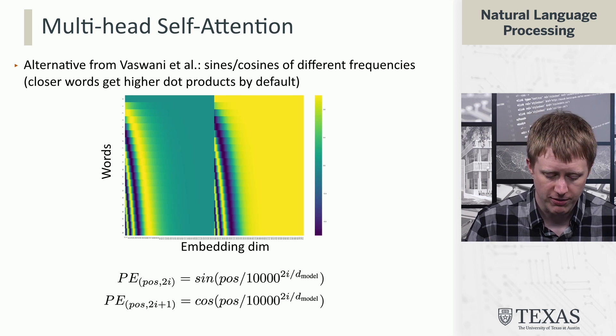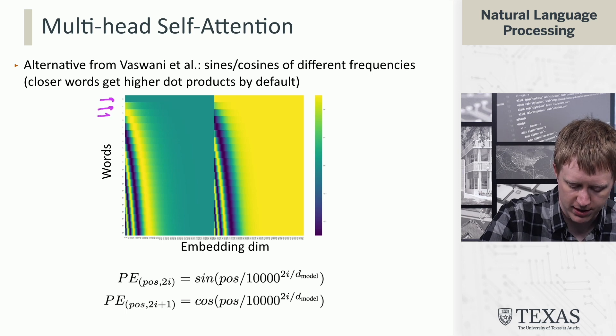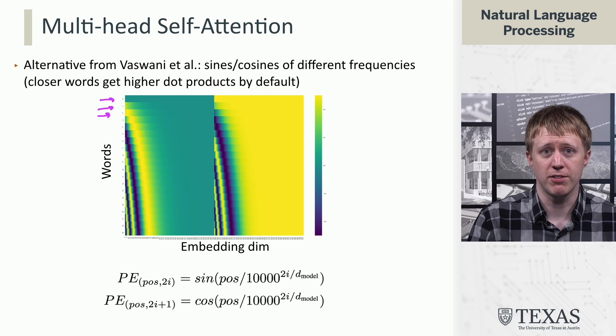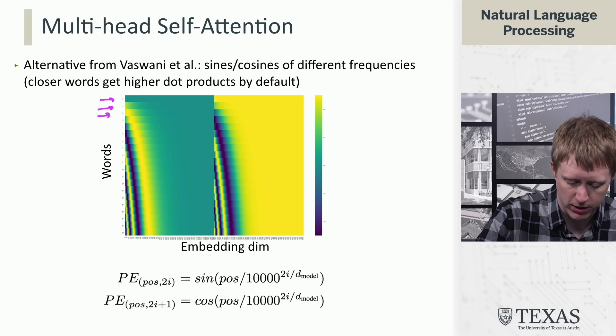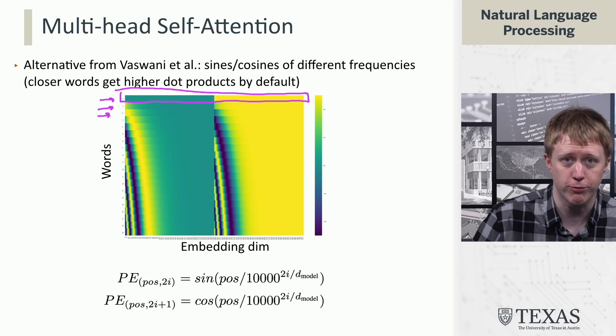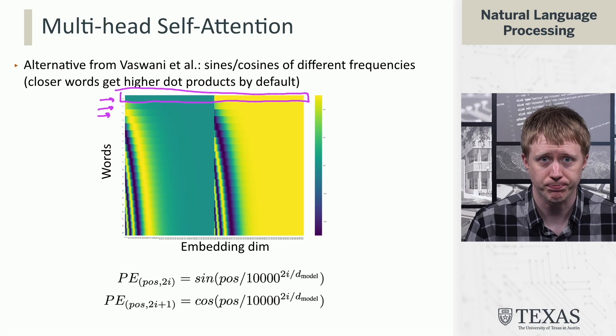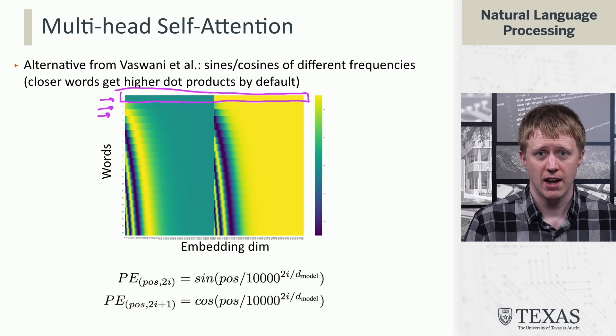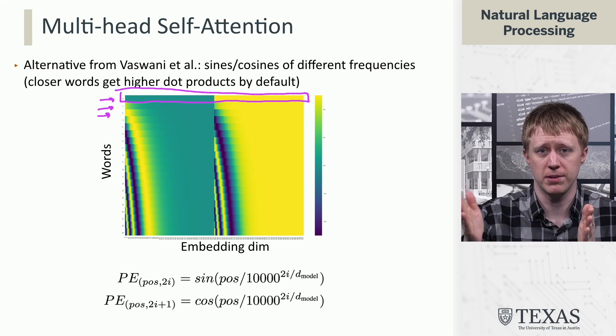So what we have on the y-axis here are basically the indices of words in the sentence. And then on the x-axis we have the value for the corresponding embedding dimension. So basically the first row here is like a vector that's going to be the positional encoding for the first token in any sequence that you're given. And this is computed based on the formulas below,